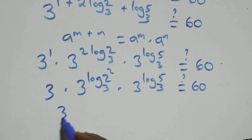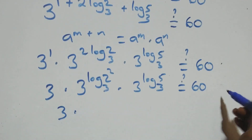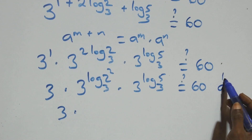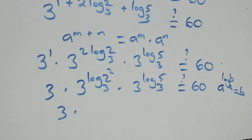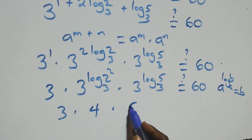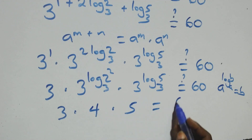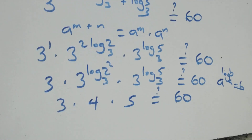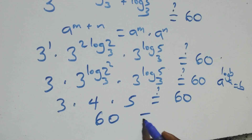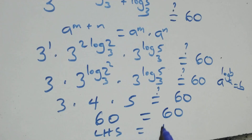So we have 3 times... applying the rule a raised to power log b base a equals b: 3 raised to power 2 log 2 base 3 gives 2 squared which is 4, and 3 raised to power log 5 base 3 gives 5. So 3 times 4 times 5 equals 12 times 5 equals 60. Left hand side equals right hand side.